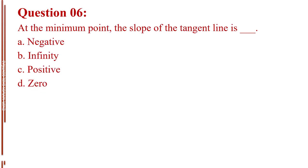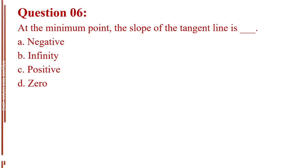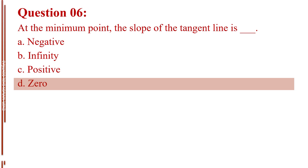Question number 6. At the minimum point, the slope of the tangent line is blank. Letter A, negative. Letter B, infinity. Letter C, positive. Letter D, zero. The answer is Letter D, zero.